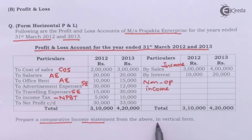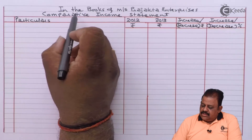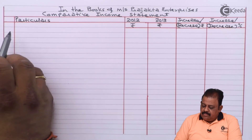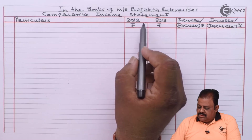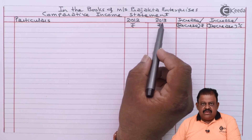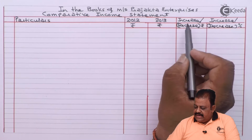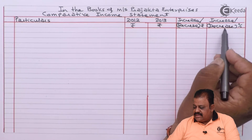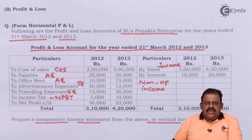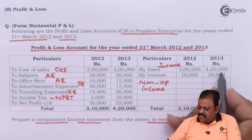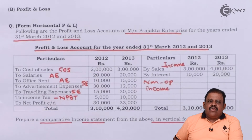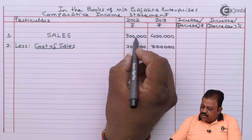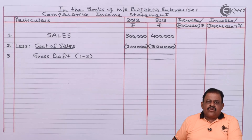In the books of Rajakta Enterprises, we set up the comparative income statement with columns for absolute amounts for 2012 and 2013, followed by two columns for increase/decrease and percentage. We start with sales: 3 lakhs and 4 lakhs. Less cost of sales: 2 lakhs and 3 lakhs. This is deducted from sales to calculate gross profit.